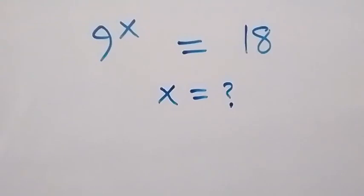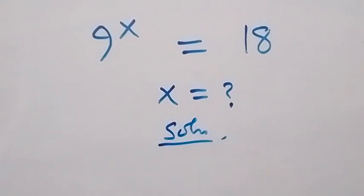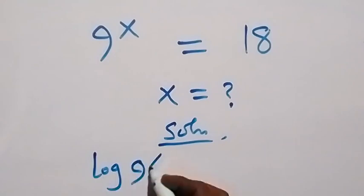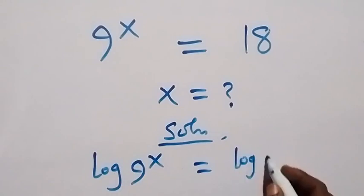Hello, you are welcome. I'll solve for x in this exponential equation. From here, we can take the log on both sides, and this becomes log 9^x equals log 18.